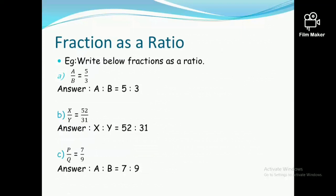We can also write a ratio from a fraction. If A over B is 5 over 3, then A is 5 and B is 3, so A ratio B is 5 ratio 3.